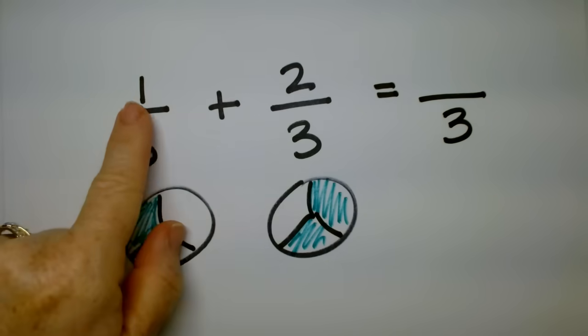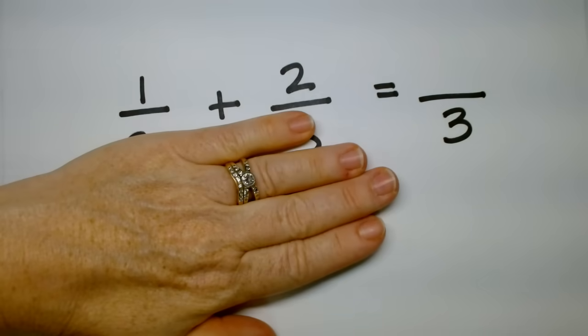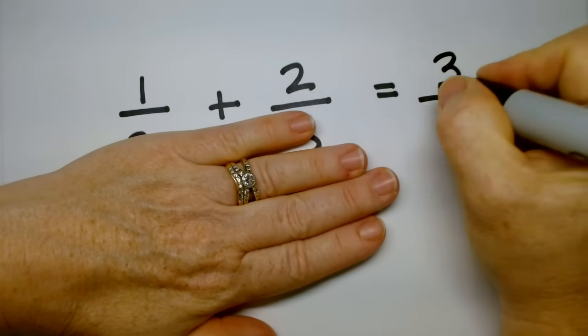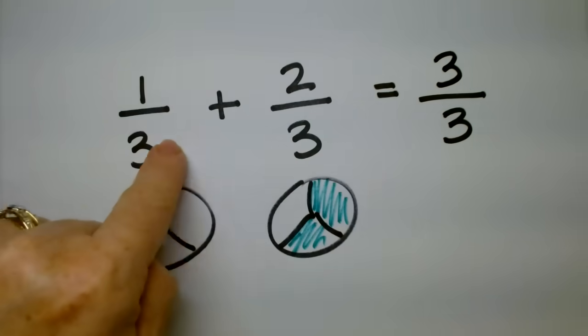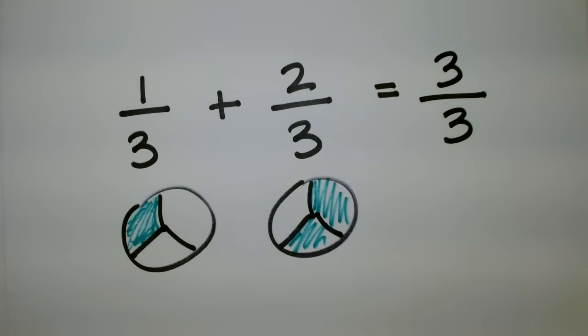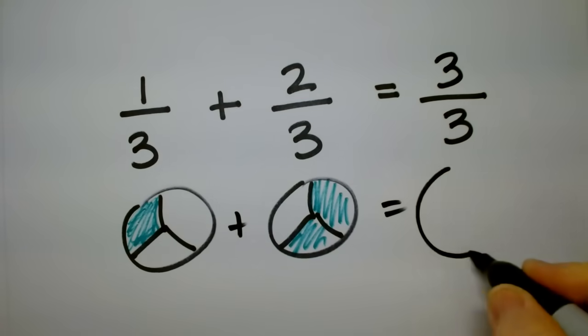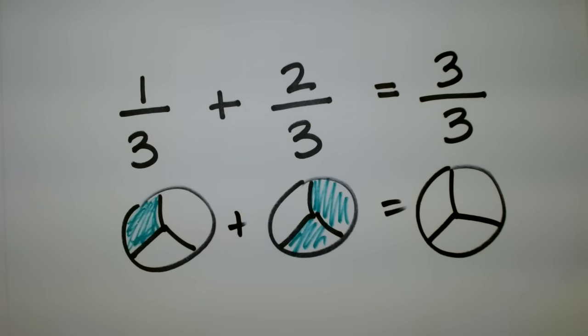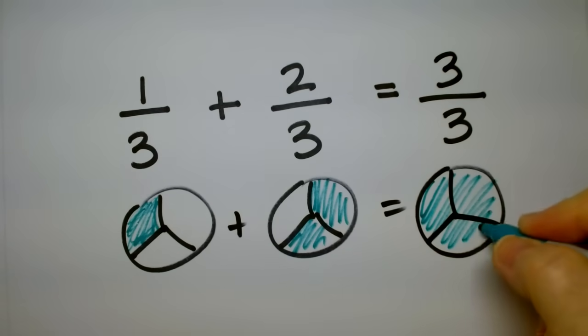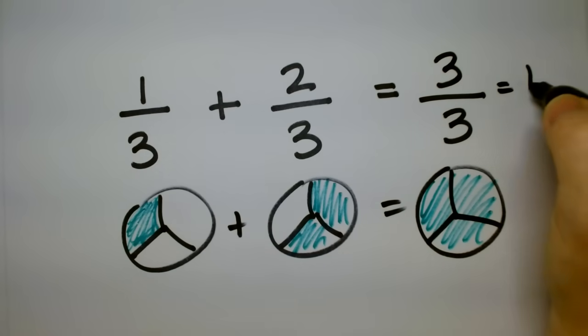So what does that mean? How many pieces all together? There's one, two, three, or one plus two. So you just add the top. One plus two is three. Just keep in mind you don't add the bottom because we don't add the number of divisions. So three out of three means we're talking about an entire pizza here. You could also say this is equal to one.